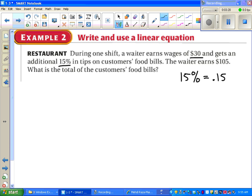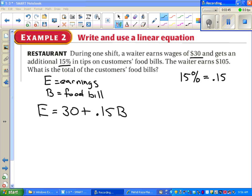And we're told the waiter earns a hundred and five dollars total. So putting all that into an equation, we might say the total earnings is thirty dollars plus fifteen percent of the food bills. So fifteen percent times the food bills. And we should, whenever we use variables, we should define those variables. We go on in the problem, it says the waiter earns a hundred and five dollars total. So we have to make sure we put that in the right place. We ask ourselves, is that the earnings or the food bill? And it's the earnings.